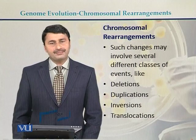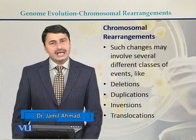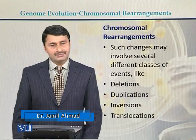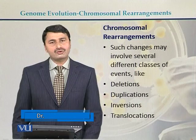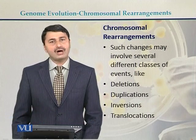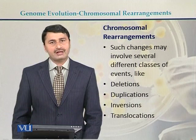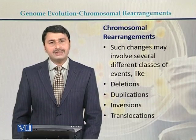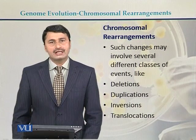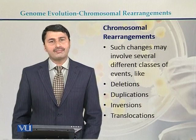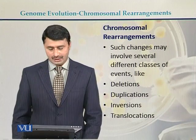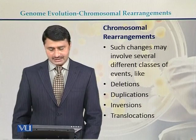Chromosomal rearrangements can be in different forms. It can be in the form of deletions, where small fragments of the chromosome or DNA can be deleted. It can be in the form of duplications, where certain fragments are duplicated. It can be in the form of inversions, where a small fragment of DNA of the chromosome is inverted, and translocations, which involve movement between two segments of the chromosomes.